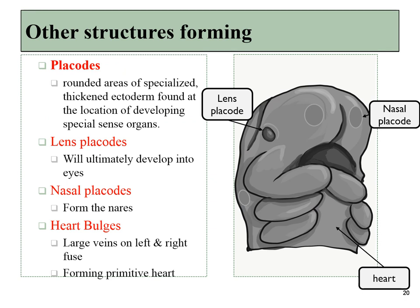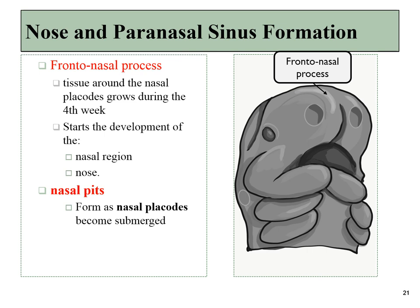There are other structures developing at this time, including a number of placodes. A placode is just a roundish area that we can identify. At this time, that includes the lens placodes, which will ultimately form the eyes, and the nasal placodes, which will turn into the nostrils — but they're not open to the nasal cavity yet, so we still call them a placode. The heart bulge is also forming and will begin to beat. As all of these tissues grow, it will push the frontonasal process upwards, which forms the nose. The nasal pits will continue to deepen until they connect to the inside, and then we can begin calling them nostrils.